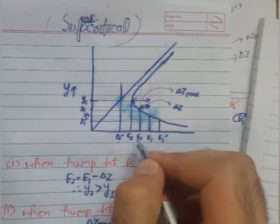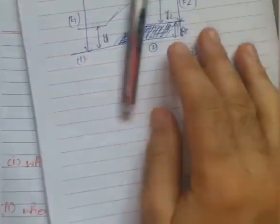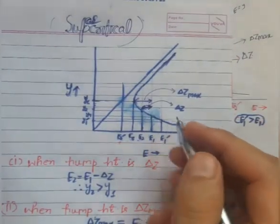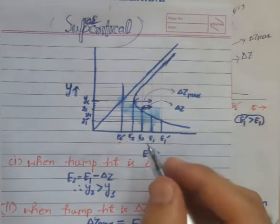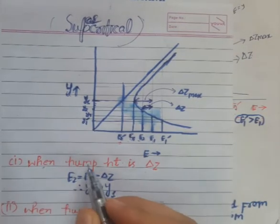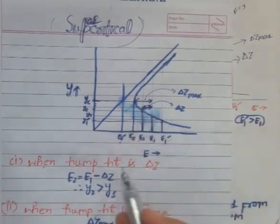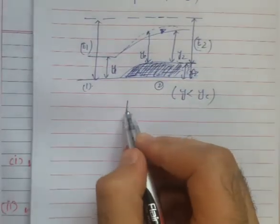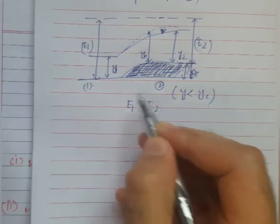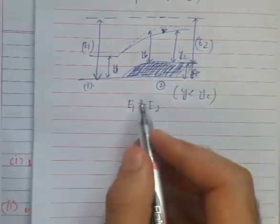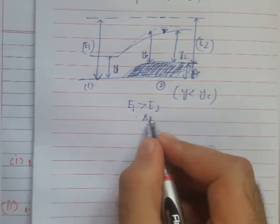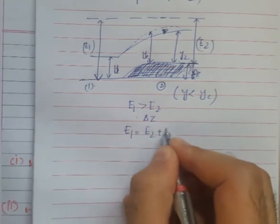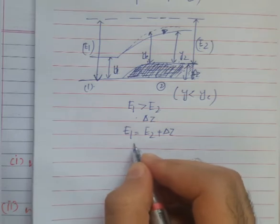Case 1: The difference between e1 and e2 at sections 1 and 2 equals ΔZ, which is the height of the hump. When the hump height is ΔZ, the specific energy at section 1 is greater than e2 by the amount ΔZ. So e1 is greater than e2, and e1 = e2 + ΔZ.